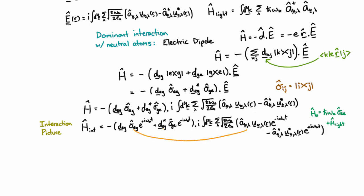So instead of getting all four of these terms, we're actually going to ignore two of them. And this is called making the rotating wave approximation. We're only going to keep the terms where the two rotations are counter-propagating.